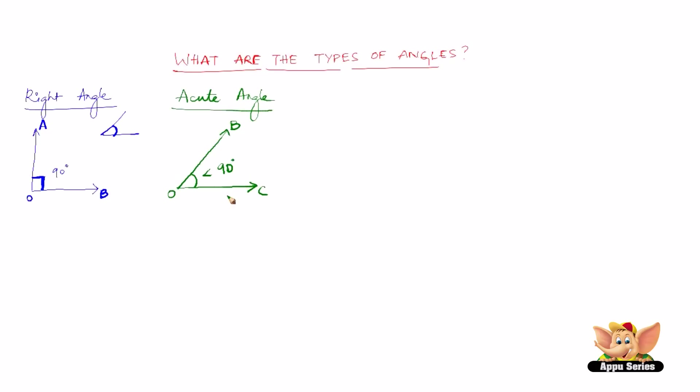More examples of acute angles can be 36 degrees, 48 degrees, 60 degrees, and so on.